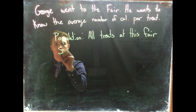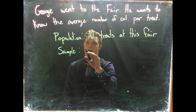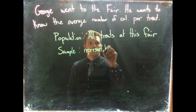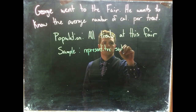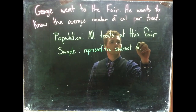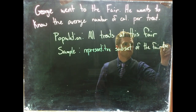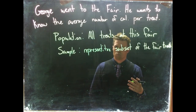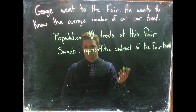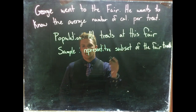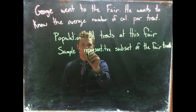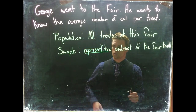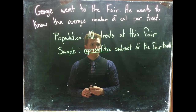So the sample would be a representative subset of the fair treats. So he would have to go out and find — maybe he goes and talks to 10 of the vendors and samples a hundred different treats, let's say 100 treats. He'd have to go out and try to get a representative sample. Getting a representative sample is difficult. We could do it through random sampling or some other methods, but for right now let's just say that it is a representative sample.